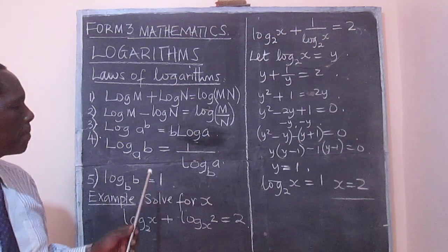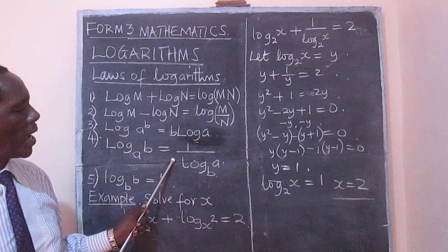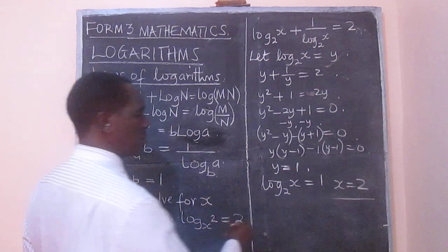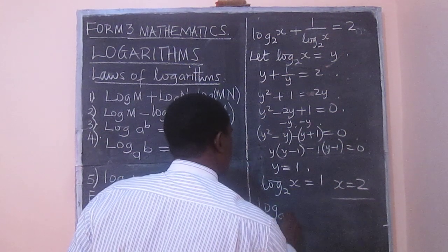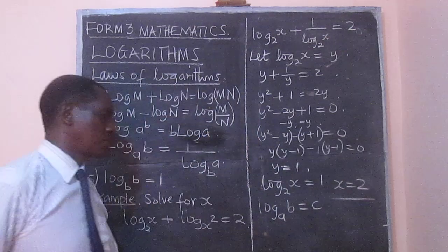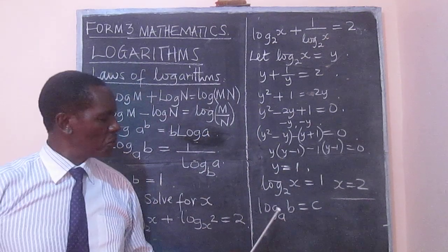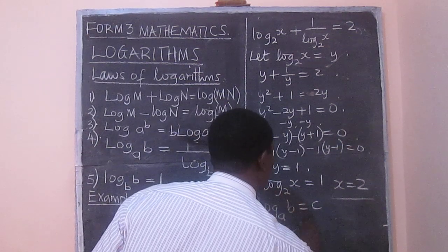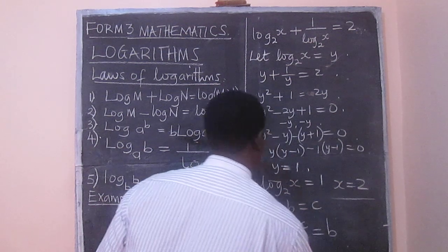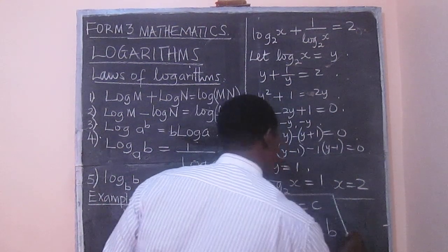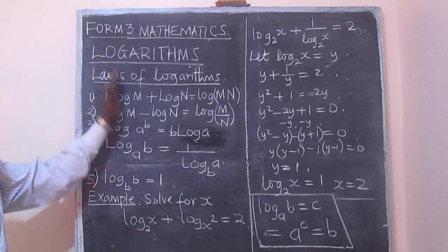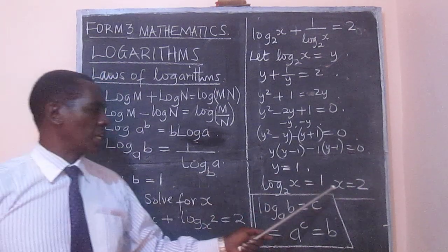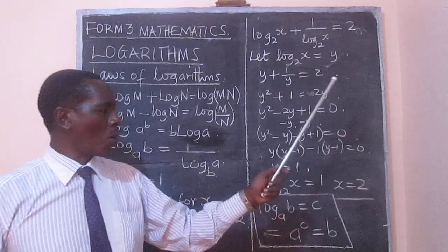We have applied this one. Actually, we have applied 2. There is one which is not here. But we can actually state it down here. We can say, whenever we are told log to base a of b is c, this always means a raised to c is equal to b. So, this is another law which I had forgotten to indicate among these ones. But it is the one we have applied at the end here, where we have gotten x equal to 2.